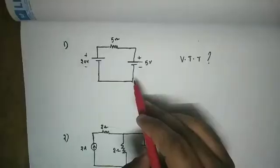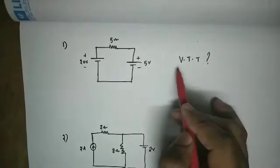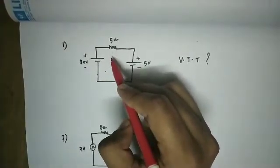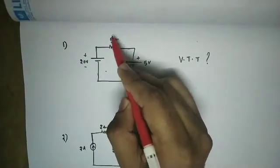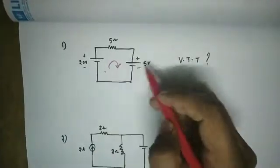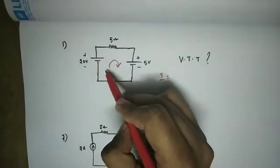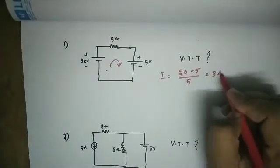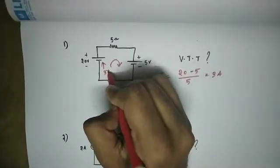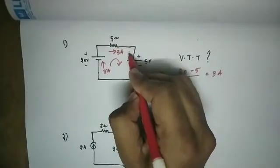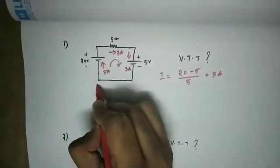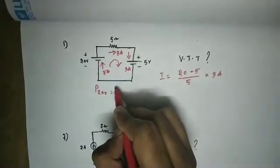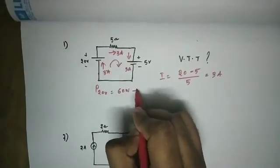First example: we have to verify Tellegen's theorem for this circuit. The current is 3A. The 20V source has current entering the negative terminal, so this is delivered power. Power delivered is 20 into 3, which is v into i, so 60 watts.